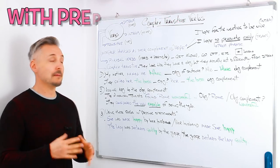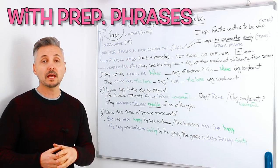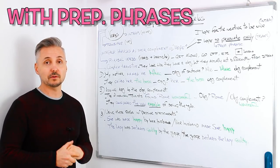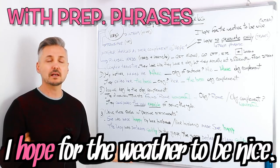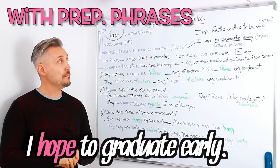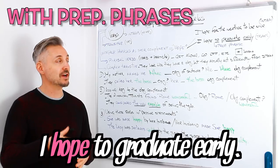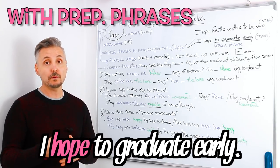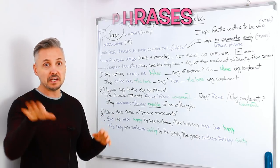Verbs can also appear with prepositional phrases as their complement, like 'hope' for example. I hope for the weather to be nice — in this case, hope is intransitive. Or I hope to graduate early — in this case, 'to graduate early' is a prepositional phrase, and hope is a transitive verb. But that's another lesson.